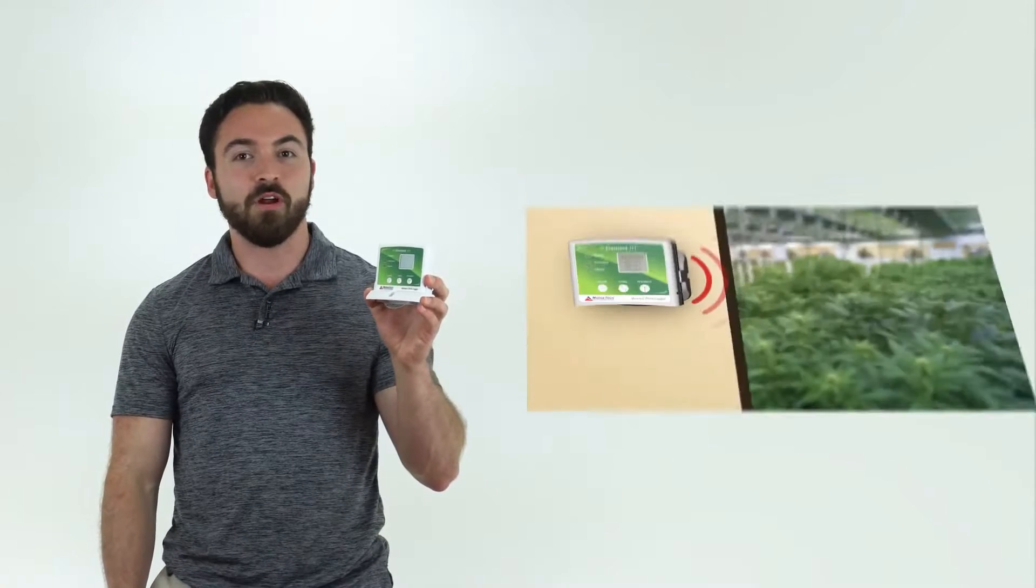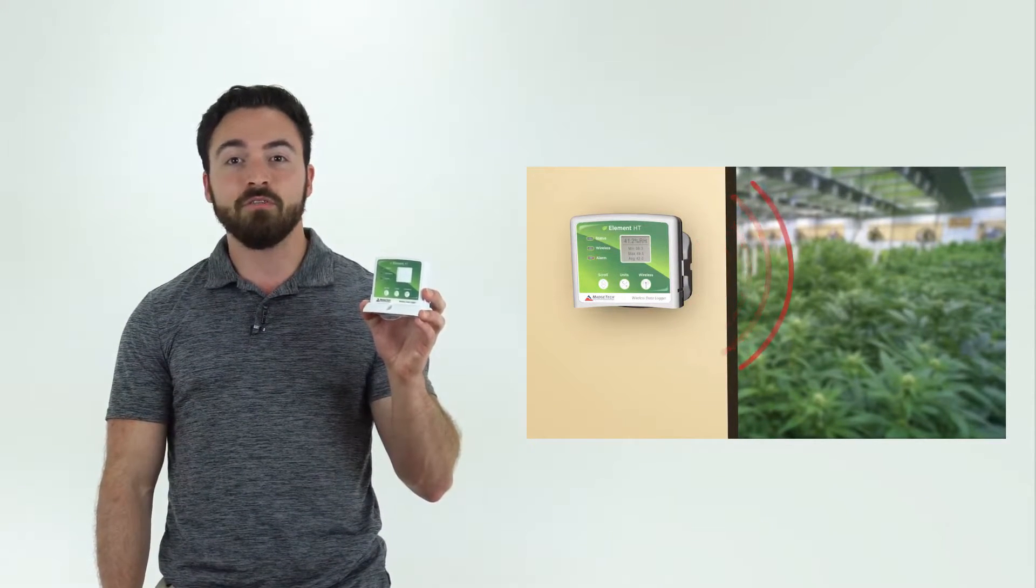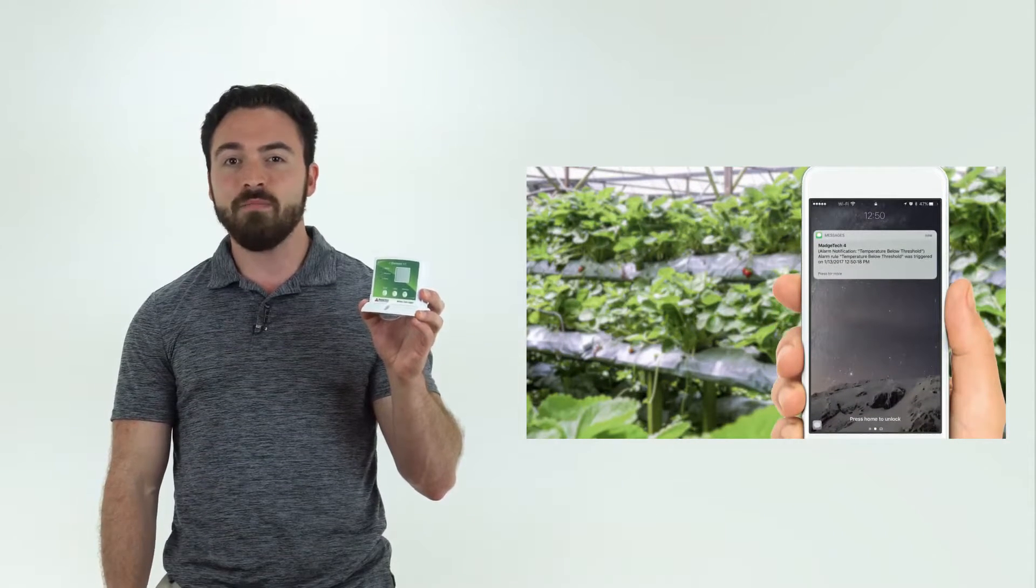The Element HT allows users to program custom high and low threshold alarms which when breached can alert you via audible alarm or can send a text or email alert to further ensure the safety of your crop.